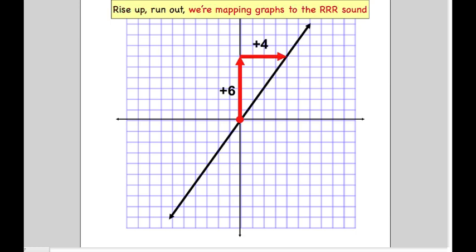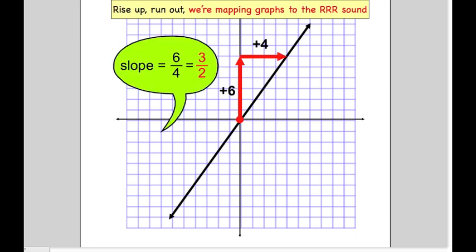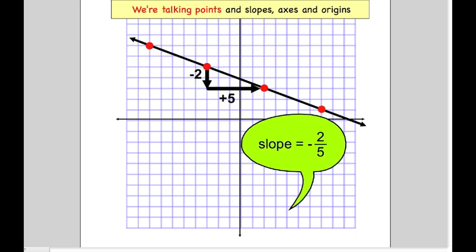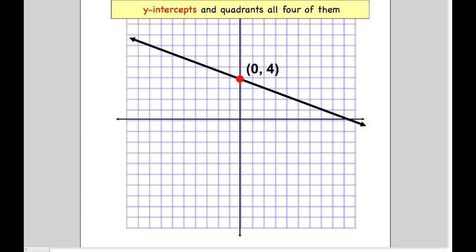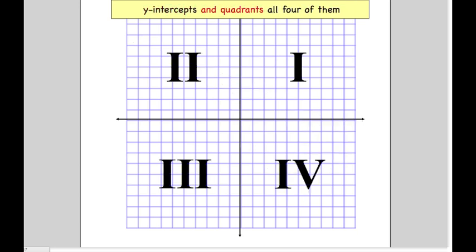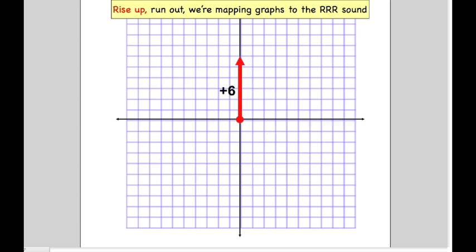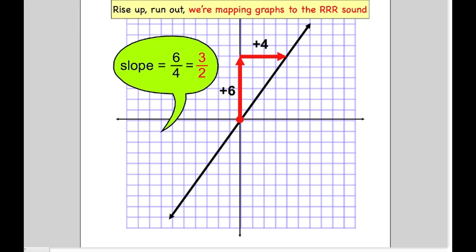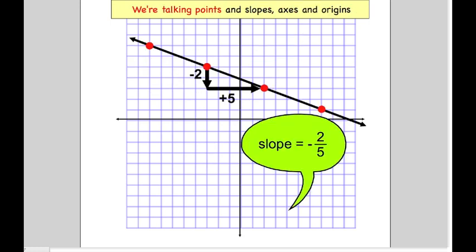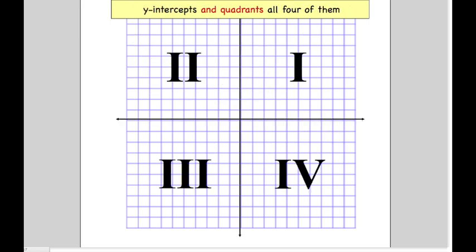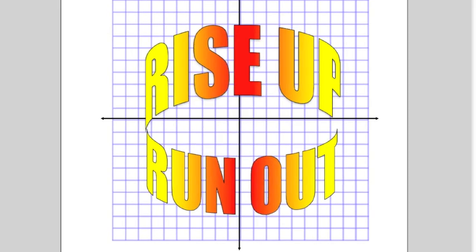Rise up, run out. We're mapping graphs to the triple R sound. We're talking points and slopes, axes and origins, Y intercepts and quadrants all four of them. Rise up, run out. We're mapping graphs to the triple R sound. We're talking points and slopes, axes and origins, Y intercepts and quadrants all four of them.